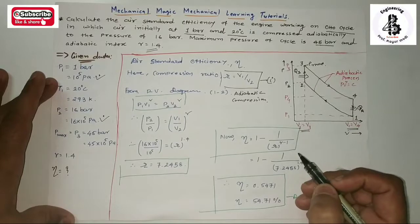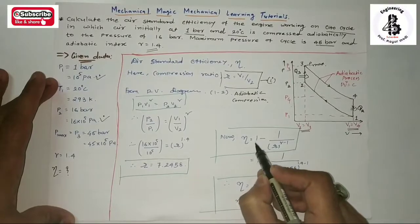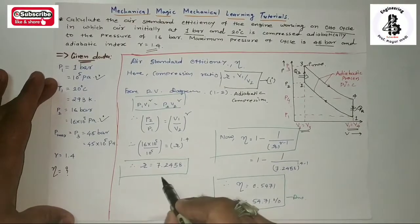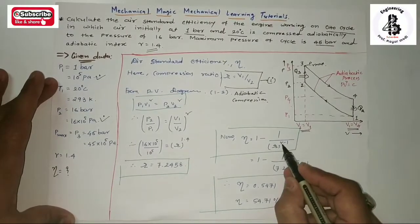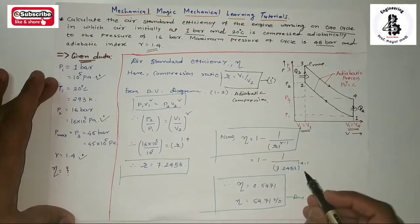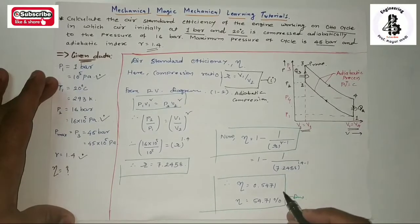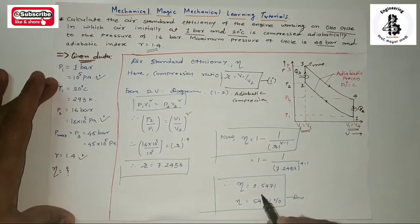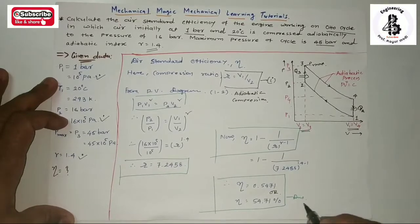From the equation of air standard efficiency: η = 1 − 1/R^(γ−1). Substituting R = 7.2458 and gamma = 1.4 and calculating, the air standard efficiency of the engine working on the Otto cycle is 0.5471, or 54.71%.